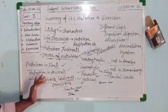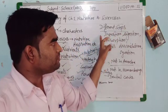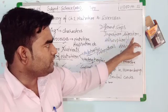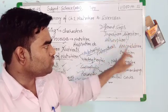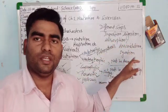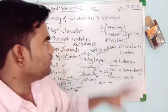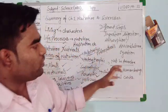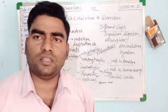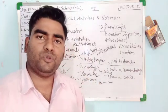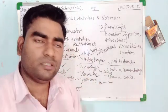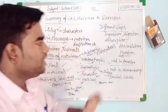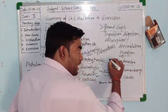After that, we covered the different steps of nutrition: ingestion, digestion, absorption, assimilation, and egestion. These are the five steps of nutrition — food is ingested, digested, absorbed, assimilated, and finally undigested food is egested.